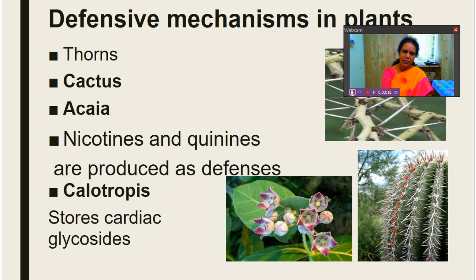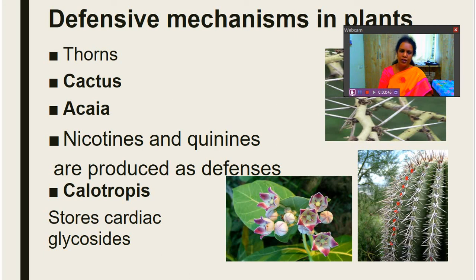There is one plant called calotropis which stores cardiac glycosides, and that is why animals do not go towards these plants. Animals do not eat them even when they look fresh and juicy, because of the chemical substances present in them. So plants also have mechanisms to defend themselves from predators, and all these are the methods by which preys avoid predators.